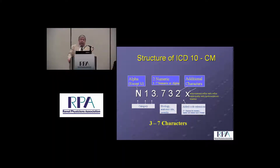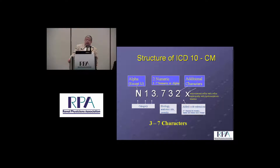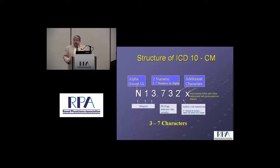A little bit of a different way of looking at the structure. You've got the alpha, which is the first in a category. Numeric can be three to seven numbers, and then you have additional codes, and then the X, which can be a spot filler.